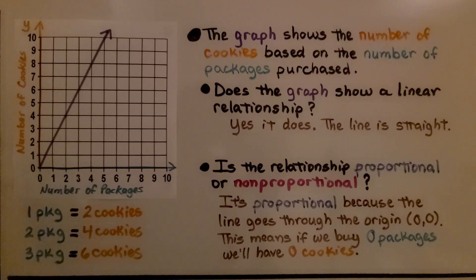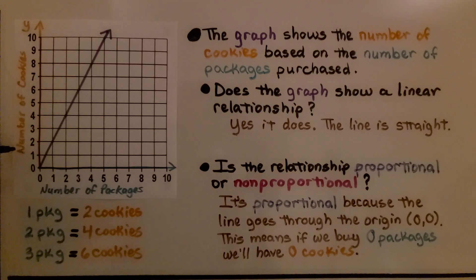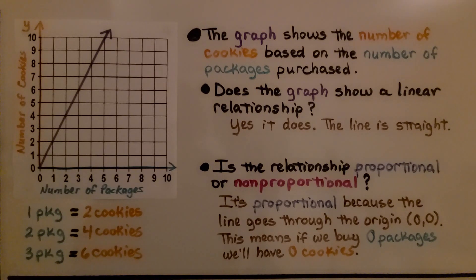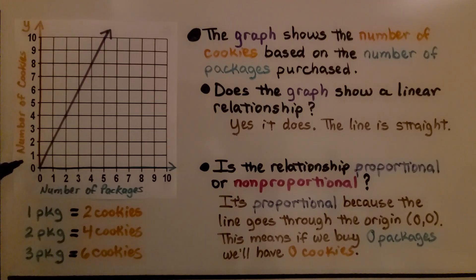Let's take a look at this graph. The x-axis is labeled the number of packages, and the y-axis is labeled the number of cookies. The graph shows the number of cookies based on the number of packages purchased. Does the graph show a linear relationship? It's a straight line — yes, it does. Is the relationship proportional or non-proportional? It's proportional, because the line goes through the origin, zero zero. This means if we buy zero packages, we'll have zero cookies.